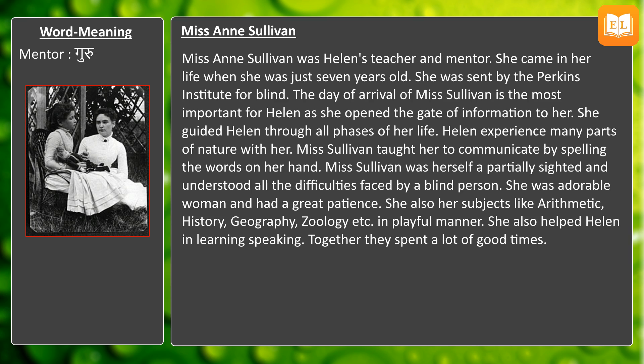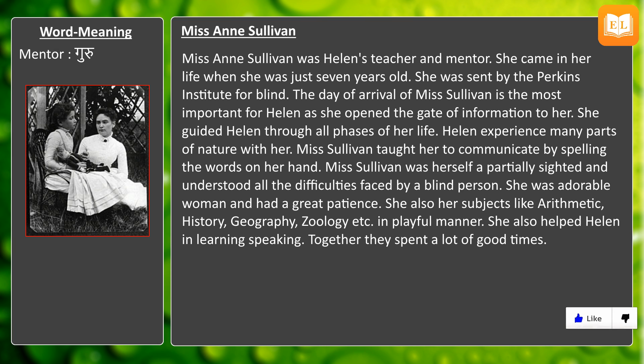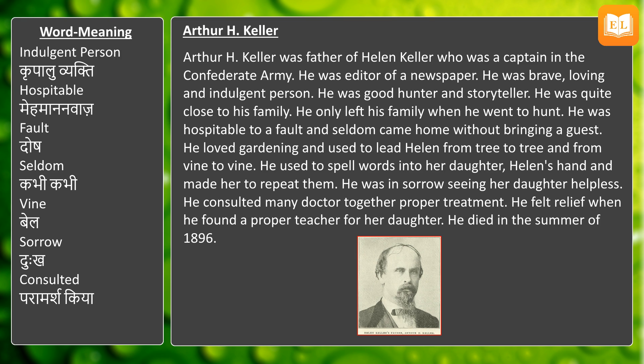Helen experienced many parts of nature with Miss Sullivan. Miss Sullivan taught her to communicate by spelling the words on her hand. Miss Sullivan was herself partially sighted and understood all the difficulties faced by a blind person. She was an adorable woman with great patience and taught subjects like arithmetic, history, geography, and zoology in a playful manner. She also helped Helen in learning to speak, and together they spent a lot of good times.